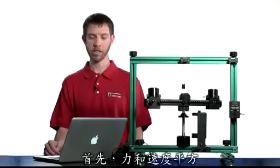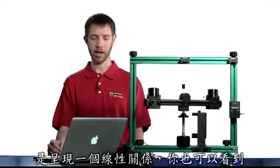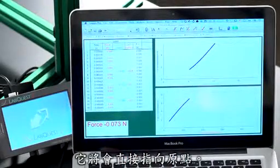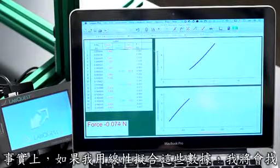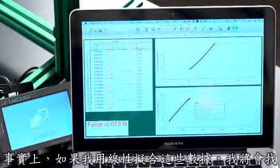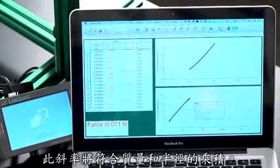You'll notice a few things. First of all, force versus the velocity squared is more of a linear graph. And also, you can see that it aims directly at the origin. That's because it's a direct proportionality. In fact, if I apply a linear fit to these data, I will find that the slope matches the product of the mass and the radius.